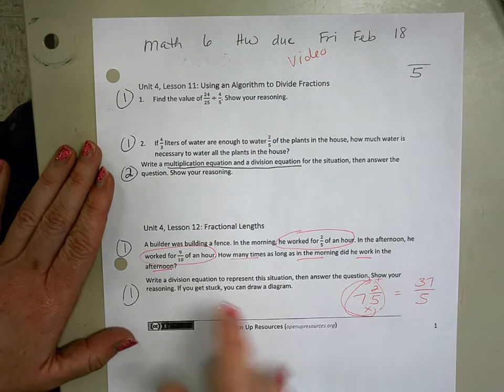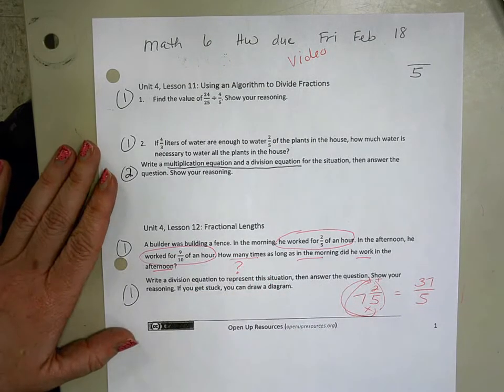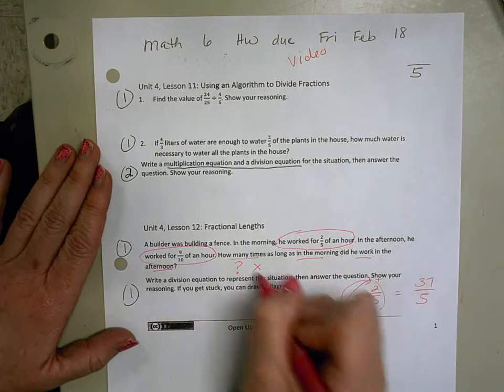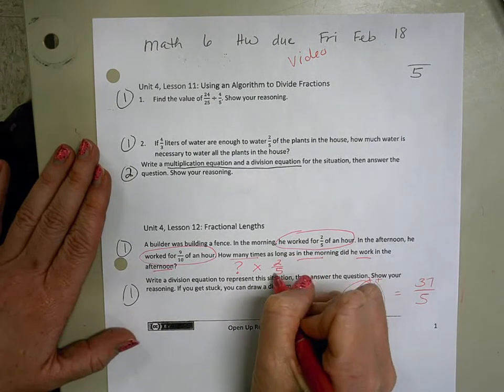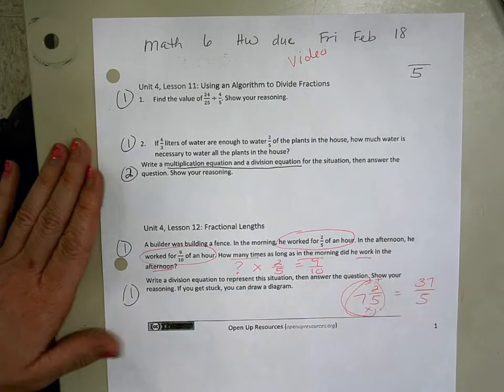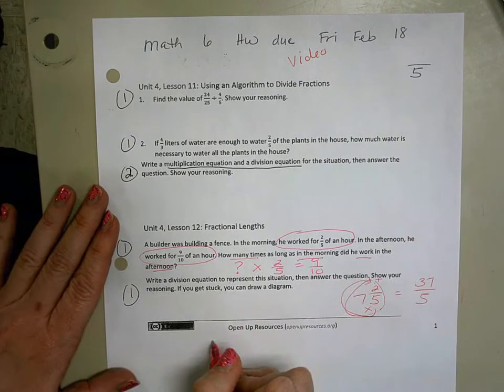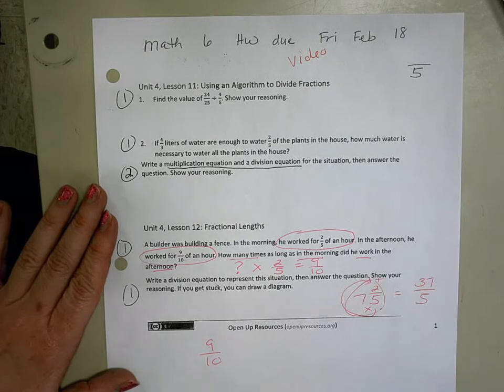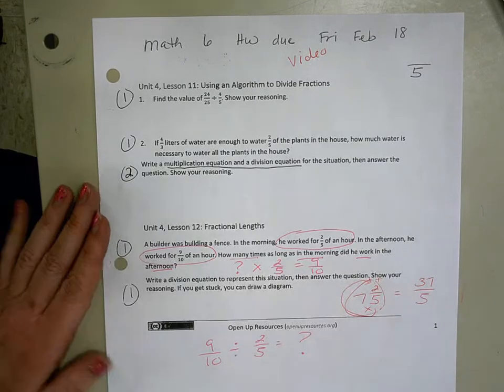How many times as long in the morning did he work in the afternoon? So that's our multiplication equation, which means if we want to make it a division equation we can reverse the equation. So nine-tenths divided by two-fifths is going to give us our answer.